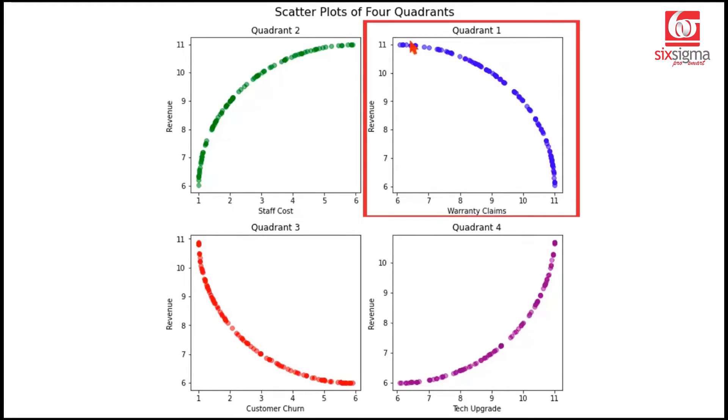Likewise, in this case, if you look at it, as the staff cost goes up, the revenue goes up. Now, this is a little contradictory, but maybe they have hired the right talent from the market. They've hired better qualified engineers and production staff. And as a result, their revenue has gone up. So one of the costs has increased, but the output, the quality of the output, the productivity has gone up.